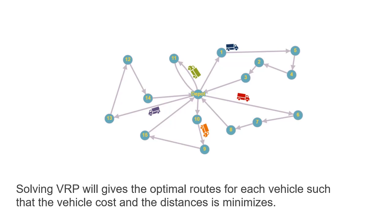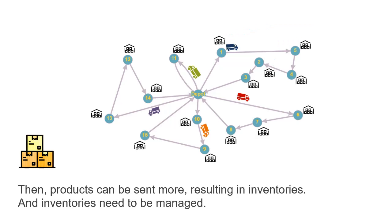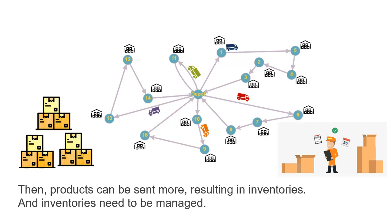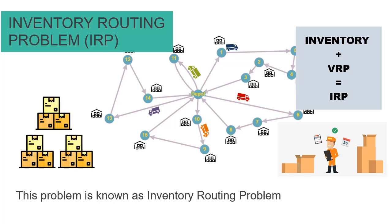Solving VRP gives the optimal policy that minimizes all costs. This is the problem considered in our research. It is the current practice in industries that customers own one or more warehouses. Having their own warehouses maximizes efficiency, and consolidation of customer deliveries further minimizes transportation costs. Having a warehouse means customers can keep inventories, and inventories need to be managed.